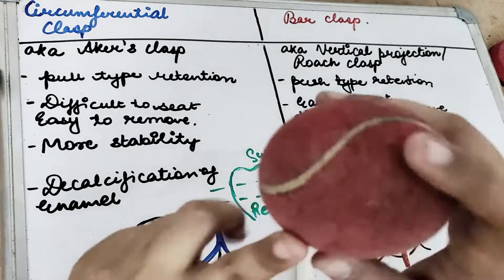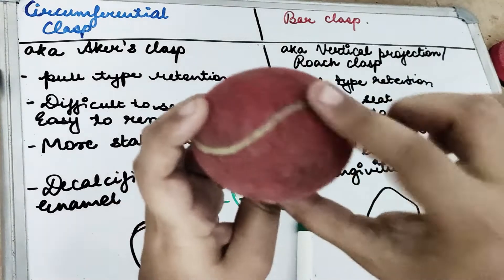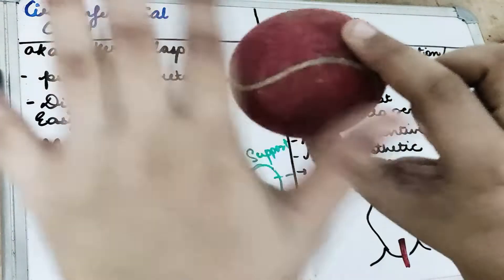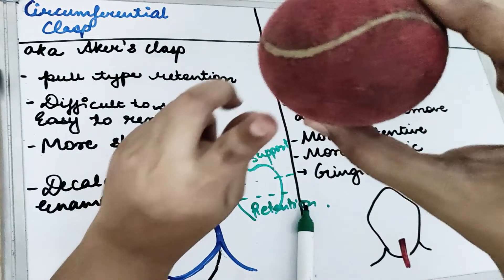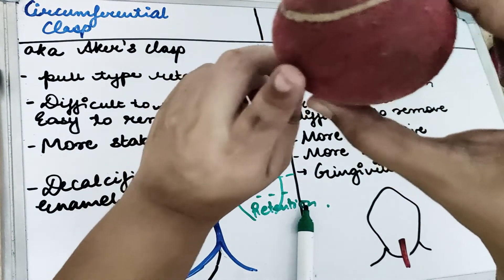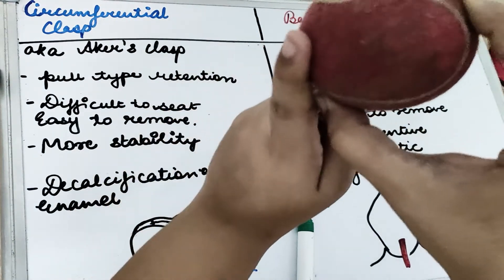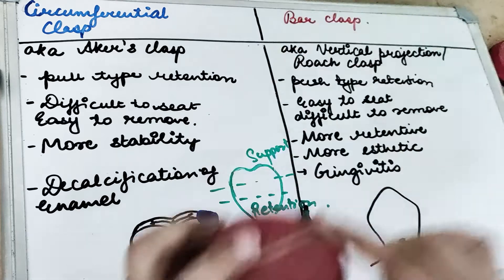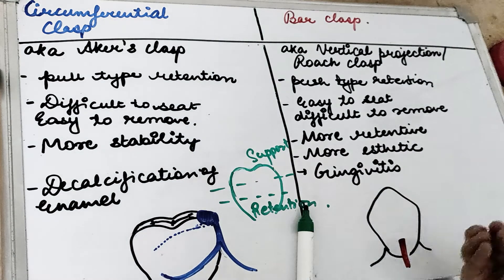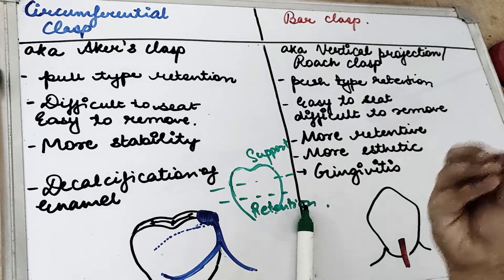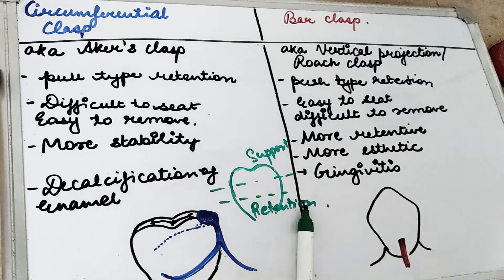A bar clasp works differently. Suppose this is the tooth — this one is the occlusal part. A bar clasp is coming from the bottom, from the gingival. As the name suggests, it is a bar which is coming from the gingiva.